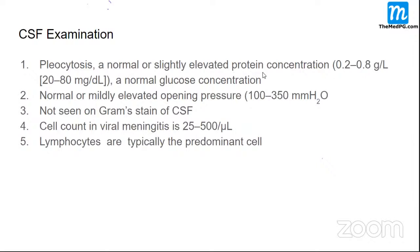In viral meningitis the cell count shows lymphocytic pleocytosis and there is a raised protein concentration. Can anybody tell me which kind of meningitis has the most raised protein? It is fungal — you get a profound problem with protein concentration in fungal meningitis.